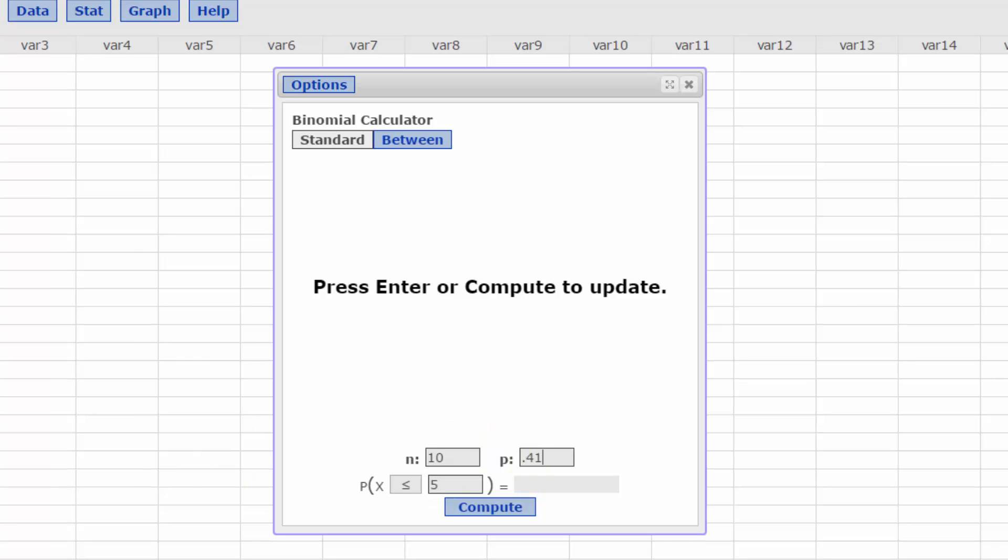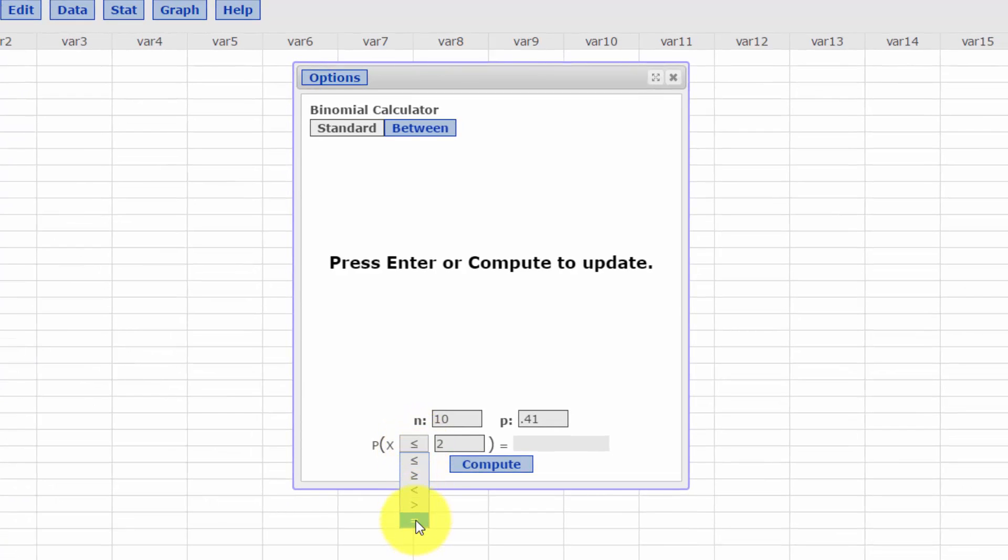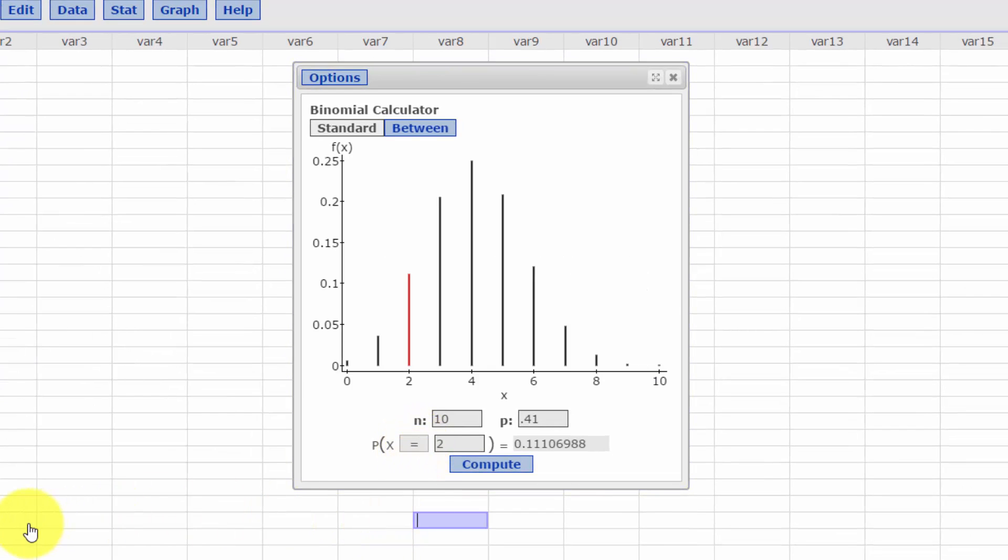The first part wants to know what is the probability that exactly two of the students said they use that. So we're going to put two in here, and then we're going to click on this box, and we want to look for equal because we want the probability of exactly two saying they do that.